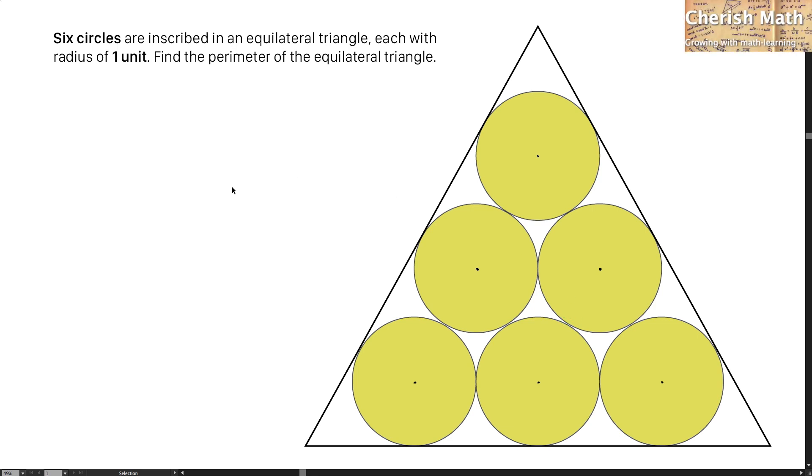Say hi from Cherish Math. This is the question. Six circles are inscribed in an equilateral triangle, each with radius of one unit. Find the perimeter of the equilateral triangle.